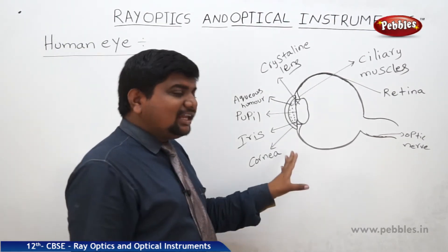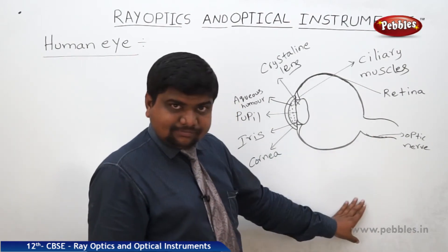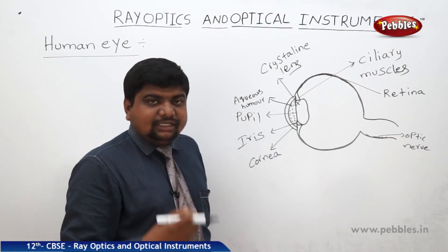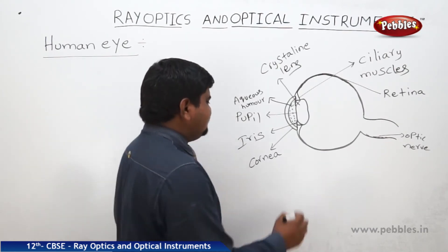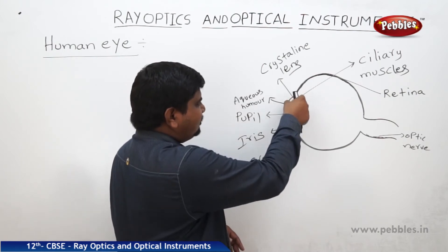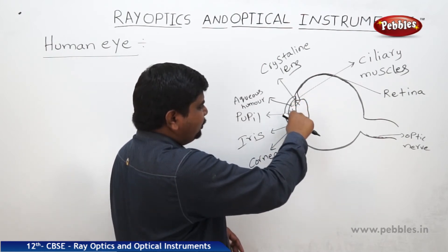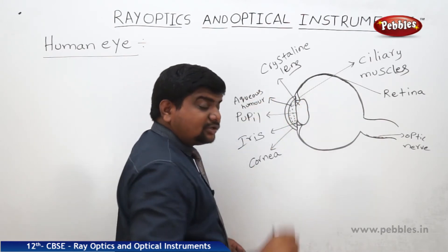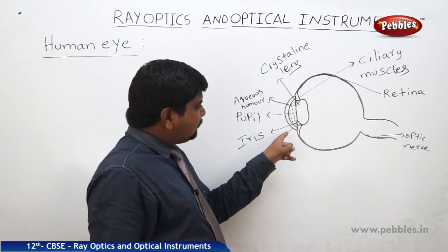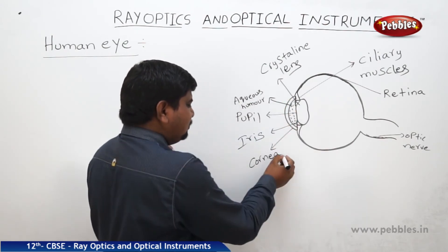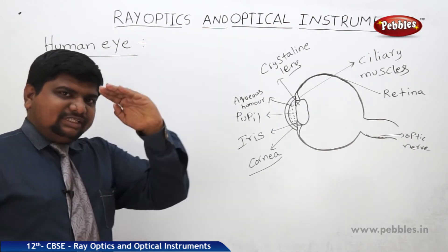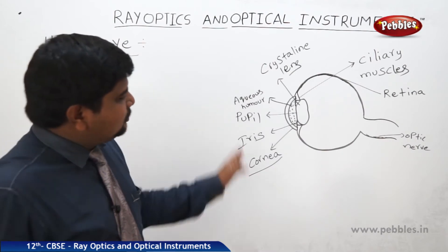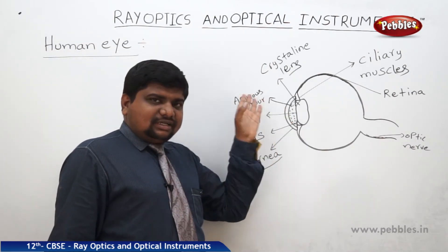Now we will look at the human eye and its different parts. The block diagram of the human eye shows that whenever you watch any object, the light ray from that object first touches the curved front portion of the human eye. This curved front portion is called the cornea, which acts like the top edge of a convex lens and is used to converge the light rays.